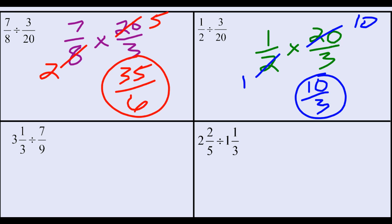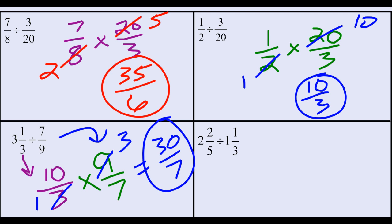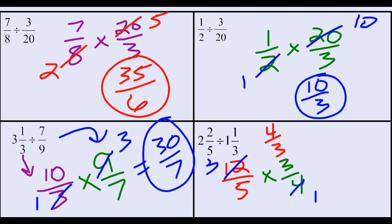In the bottom left-hand corner, three and one-third divided by seven-ninths. First convert the mixed number to an improper fraction: ten-thirds. Dividing by seven-ninths is the same as multiplying by nine-sevenths. Divide nine and three both by three, and the answer is thirty over seven. Finally, two and two-fifths divided by one and one-third converts to twelve-fifths divided by four-thirds, which means multiplying by three-fourths. Simplify twelve and four by dividing by four, giving three times three equals nine over five times one equals five, so nine-fifths.